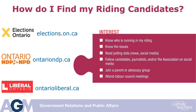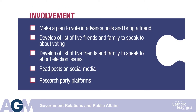The involvement puzzle piece includes things such as making a plan to vote in advance polls and bringing a friend to those advance polls. Develop a list of five friends and family to speak with about voting, and another list of five friends to speak about key election issues. If you visit Awekta's political action portal, you'll find handy tips on how to engage. Read posts on social media and research party platforms.